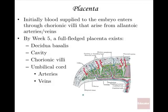The placenta: initially blood supply enters through chorionic villi, supported by allantoic arteries and veins. By week five you would see a placenta, and from that point on it's there, growing as time goes on to help the growing baby. A full-fledged placenta has some major layers worth introducing.